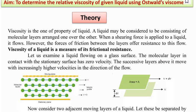The aim is to determine the relative viscosity of given liquid using Ostwald viscometer. The theory: viscosity is one property of liquid. A liquid may be considered to be consisting of molecular layers arranged one over the other. When a shearing force is applied to a liquid, it flows. The forces of friction between the layers offer resistance to this flow. Viscosity of a liquid is a measure of its frictional resistance.